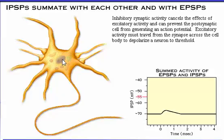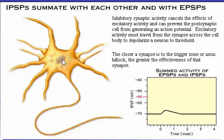Inhibitory synaptic activity cancels the effects of excitatory activity and can prevent the postsynaptic cell from generating an action potential. Excitatory activity must travel from the synapse across the cell body to depolarize a neuron to threshold. The closer a synapse is to the trigger zone or axon hillock, the greater the effectiveness of that synapse.